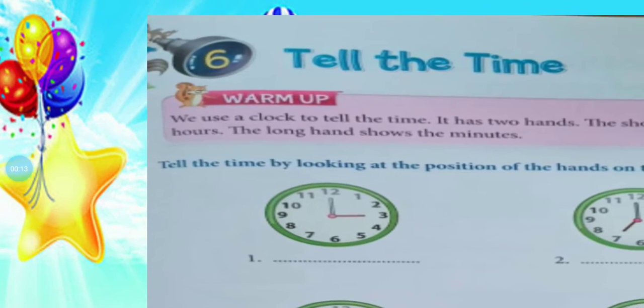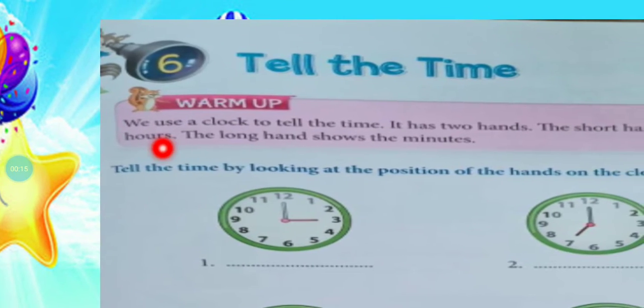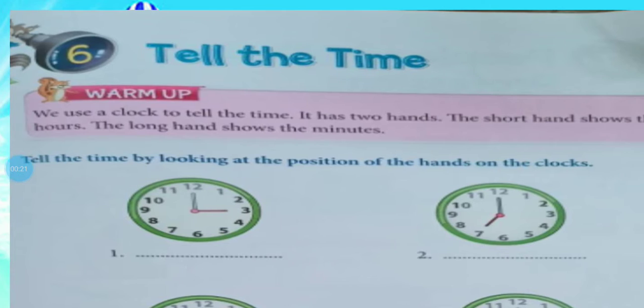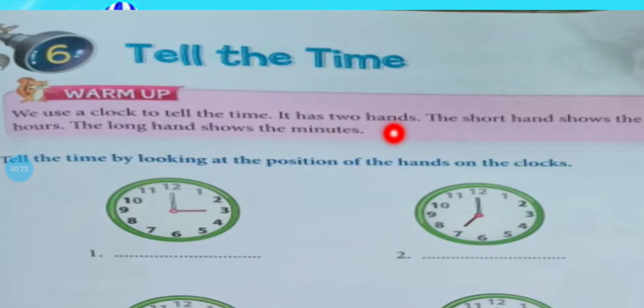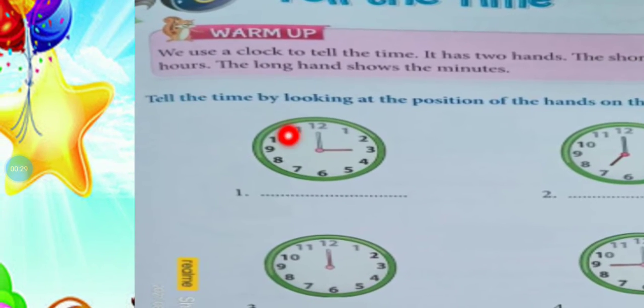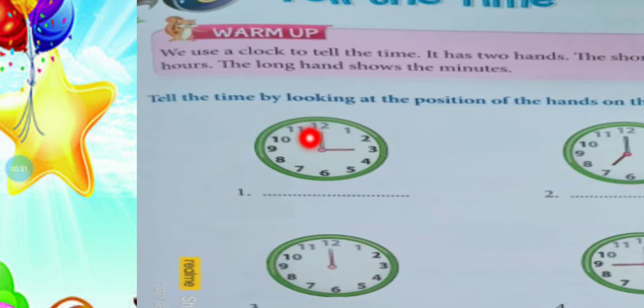See, we use a clock to tell the time. It has two handles. The short handle shows the hours, and the long handle shows the minutes. And the long and slim handle is the second hand.